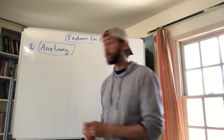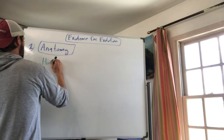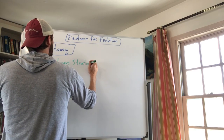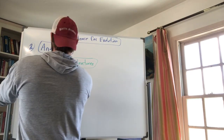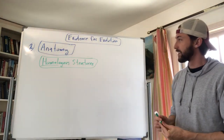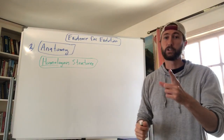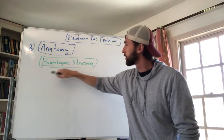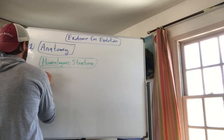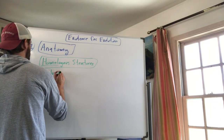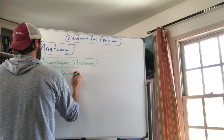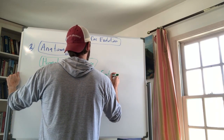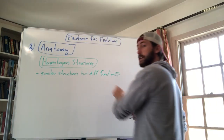Homologous structures are structures that are similar in structure but different in function. Remember: structure is what it looks like, function is the job it does. Homologous structures are similar in structure but different in function, and they came from a common ancestor.